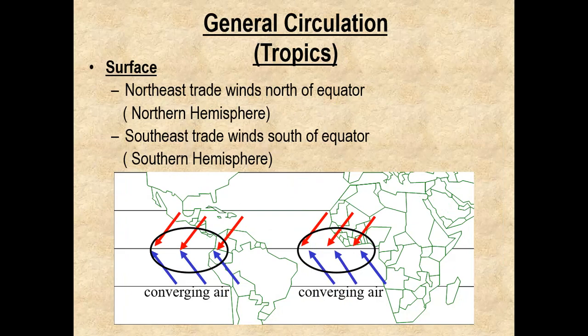What's the general circulation like in the tropics? At the surface, we have northeast trade winds which occur north of the equator, represented by the red arrows. The blue arrows represent the southeast trade winds south of the equator in the southern hemisphere. Any time you have these airstreams meeting — the northeast trades and southeast trades coming together — that's known as convergence. There's a definite name for that main line of convergence around the globe: the intertropical convergence zone, sometimes called the near-equatorial trade wind trough. This is generally how thunderstorms develop in the tropical areas.